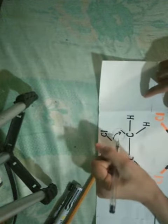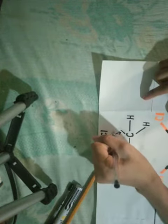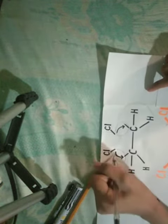As you could see, this chlorine will connect to this one, and this chlorine will connect to the carbon on the left side.